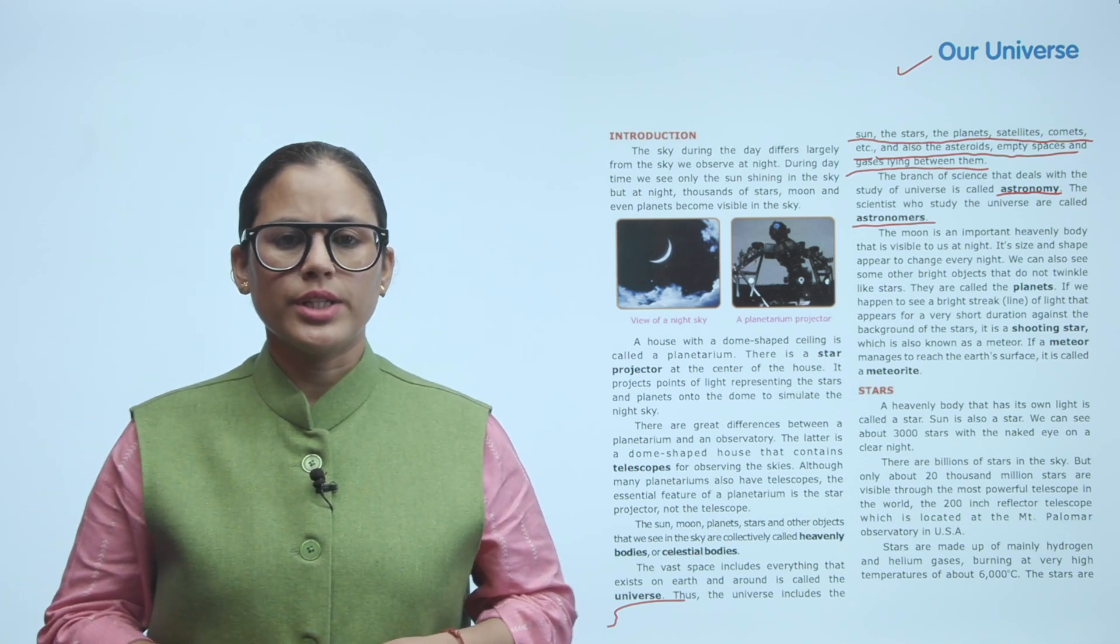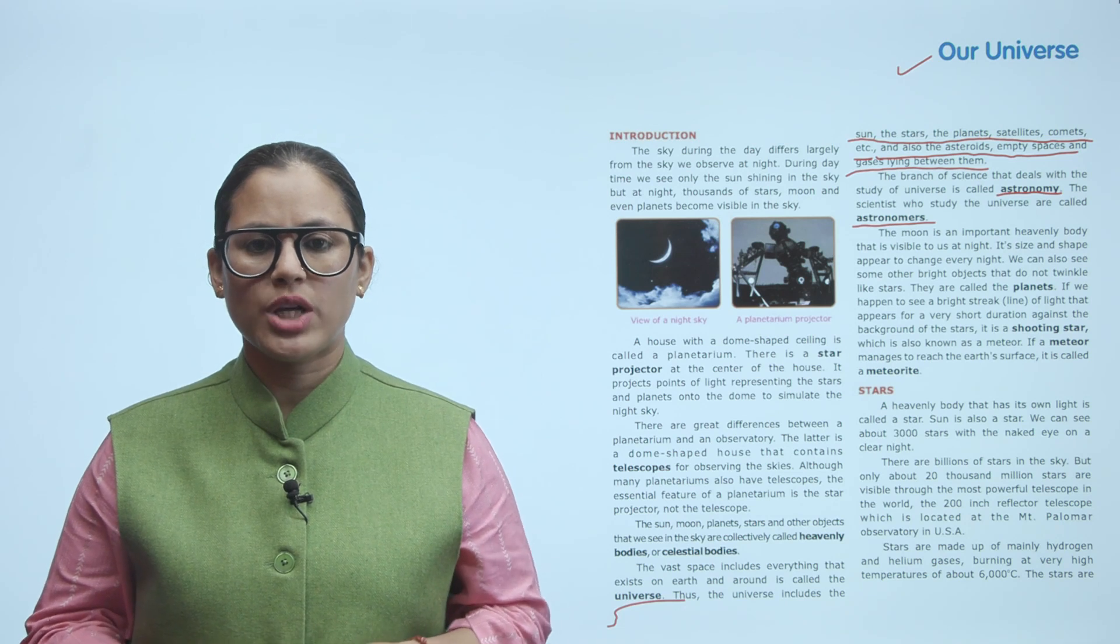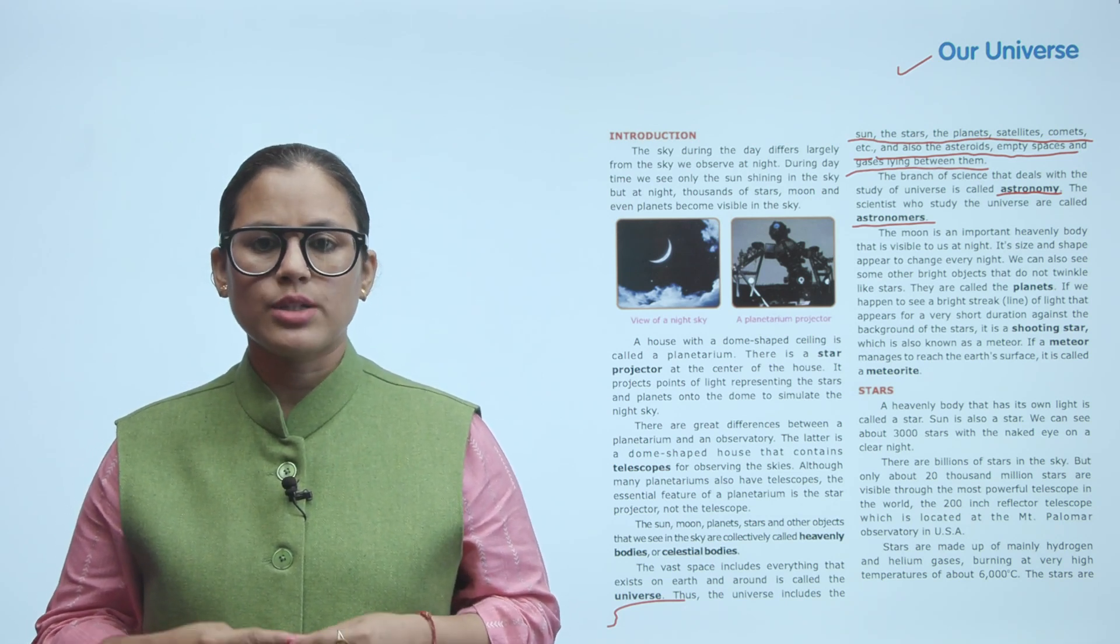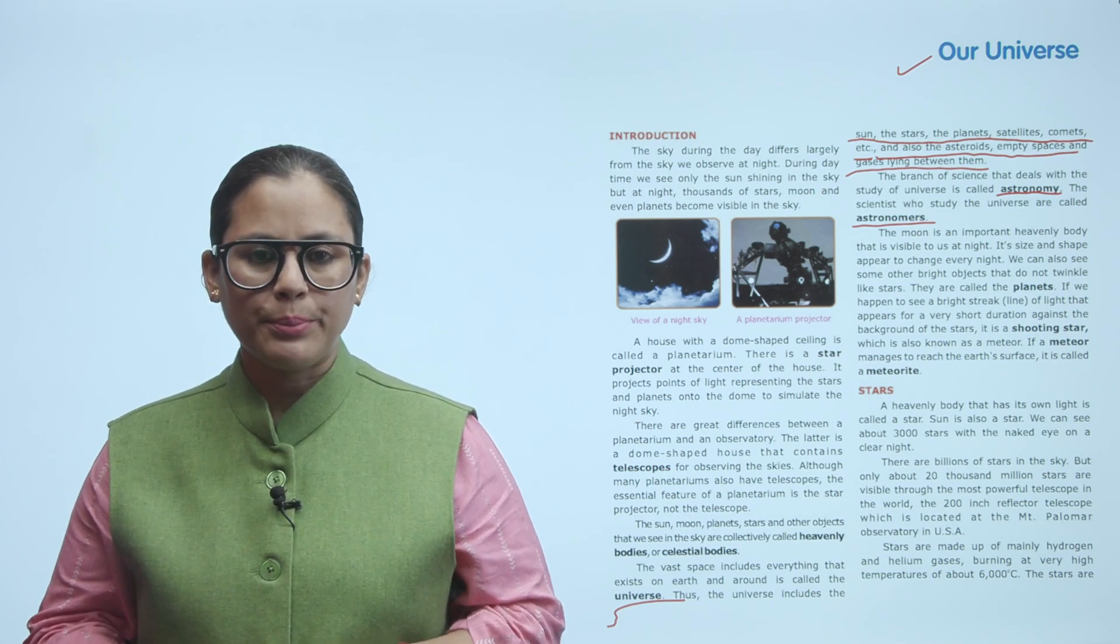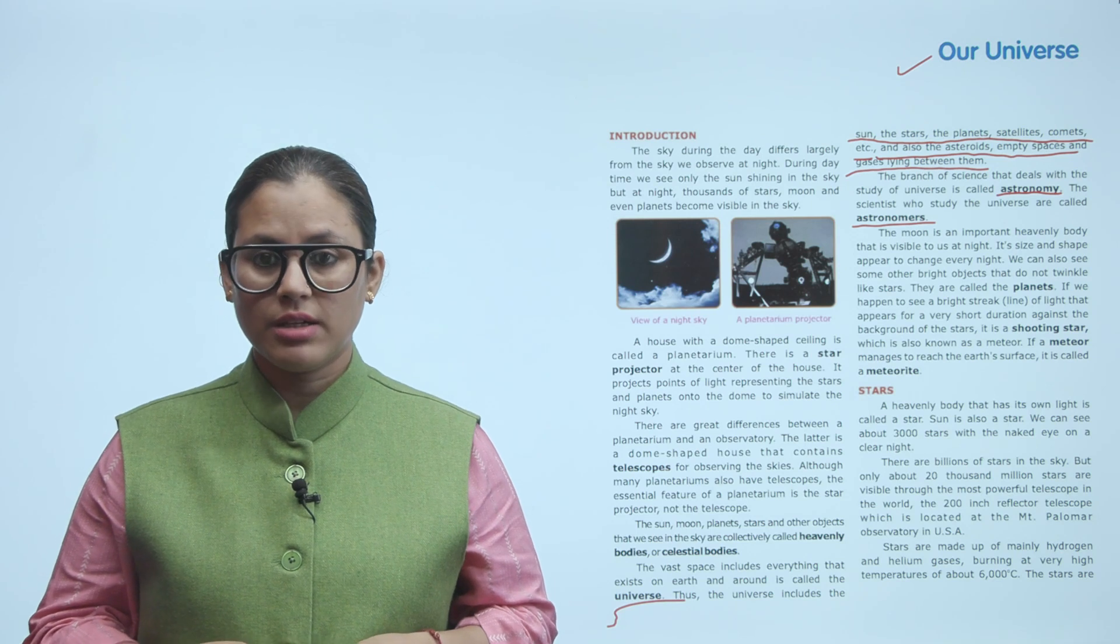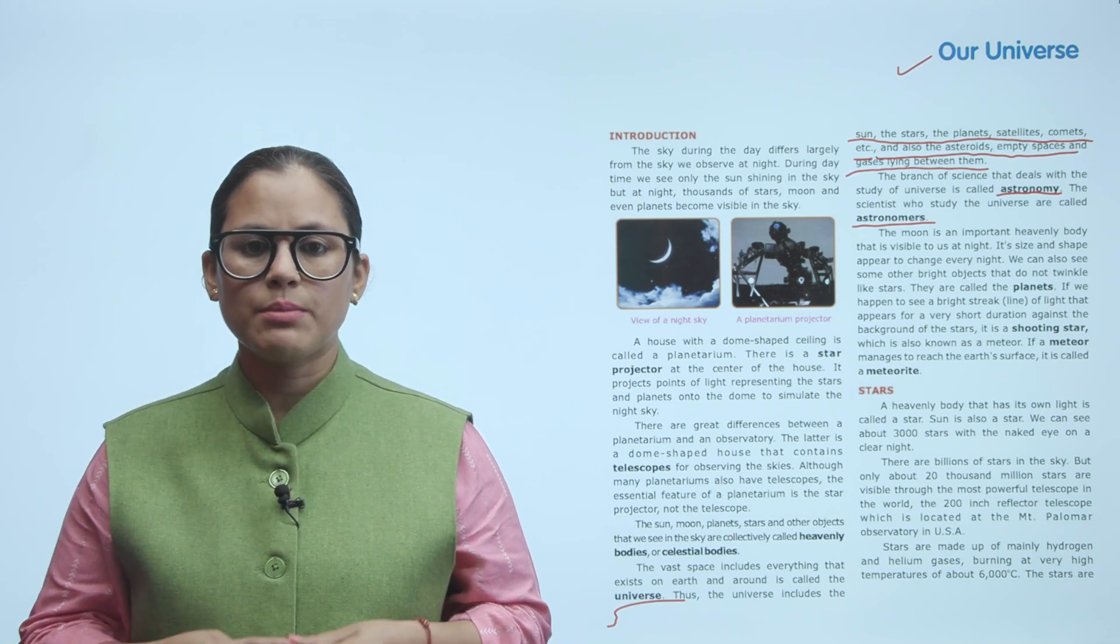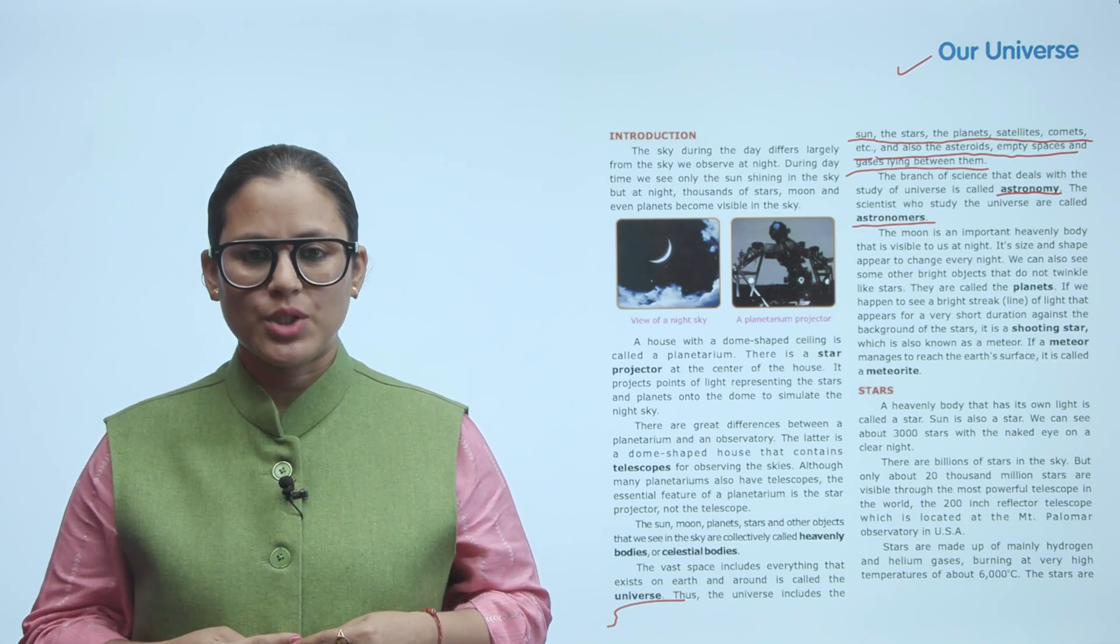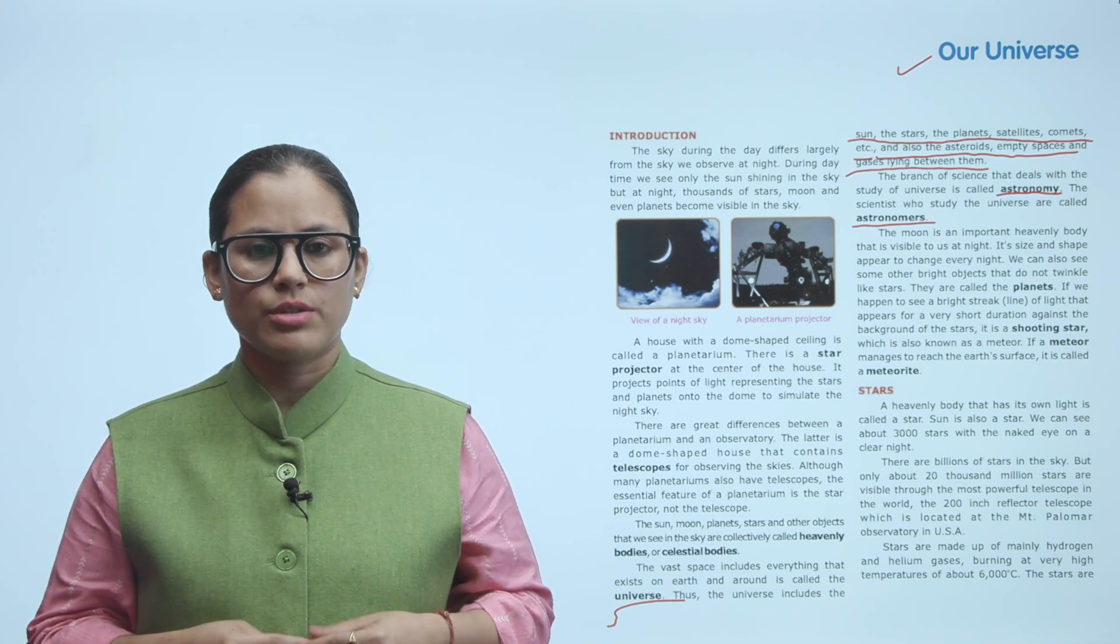The moon is an important heavenly body that is visible to us at night. Its size and shape appear to change every night. We can also see some other bright objects that do not twinkle like stars - they are called planets. If a bright streak of light appears for a very short duration against the background of stars, it is a shooting star, also known as a meteor. If a meteor reaches the earth's surface, it is called a meteorite.